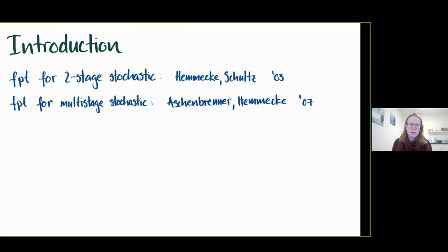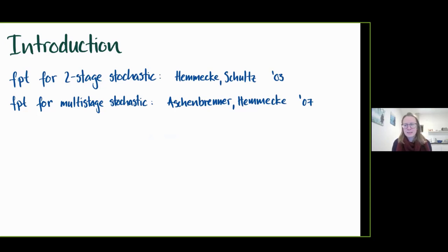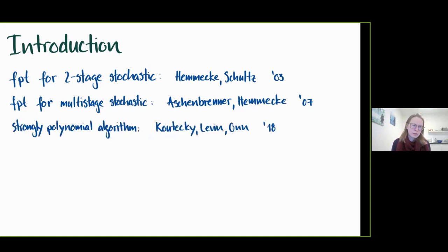Both two-stage and multi-stage cases are fixed-parameter tractable. For two-stage this was shown by Hemmecke, Schultz in 2003, and for multi-stage stochastic matrices by Aschenbrenner. The first strongly polynomial algorithm is due to Koutecký, Levin, and Mnich in 2018.